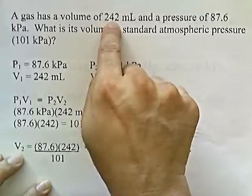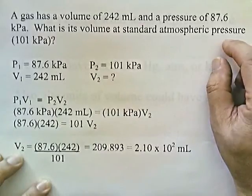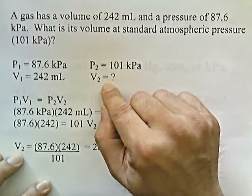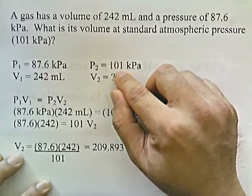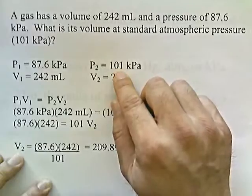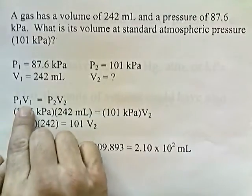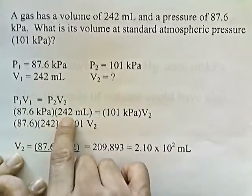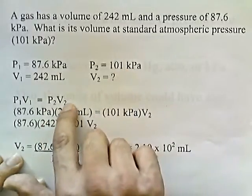The initial size of the balloon is 242 milliliters. The pressure in the balloon changes to 101 kilopascals, and we want to know what's happened to the volume. We could say the balloon is taken to an area where there's more atmospheric pressure surrounding it, so the balloon is going to get squashed and the pressure inside gets bigger. Our formula is P1V1 equals P2V2. The initial pressure is 87.6, the initial volume is 242, and the new pressure is 101. We're solving for the volume.